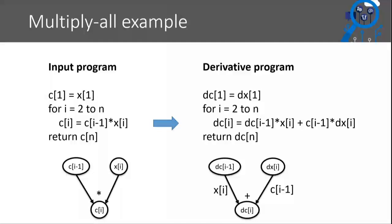In the literature on AD, when people derive these derivative programs or tangent programs, they often interleave the operations between the input program and the derivative program - because I need to compute C_i before I can use it in the derivative program. So this program refers to variables that were in the original program. In practice, to actually compute DC_N, you'd either first compute the original program and then the derivative program, or more efficiently interleave the operations. However, I find it much clearer to think of it as two separate programs, one of which you just happen to run before the other.